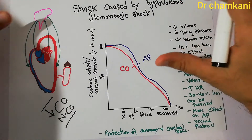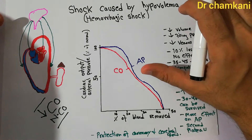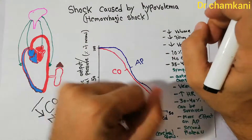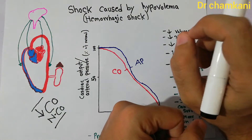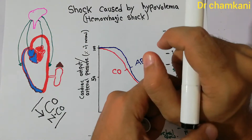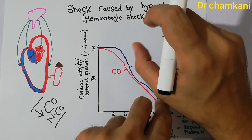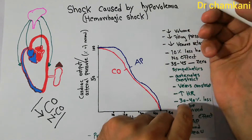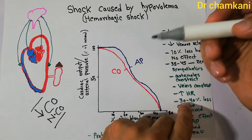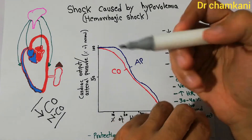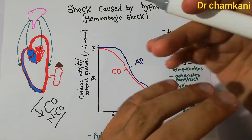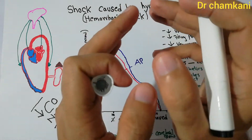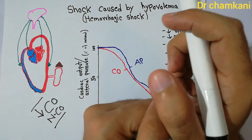There are three different stages of shock: the non-progressive, the progressive, and the irreversible stages. Before discussing each stage in detail, we are going to consider hemorrhagic shock as an example to see how the human body responds and how the compensatory mechanisms react to decreased blood flow or inadequate supply of nutrients.